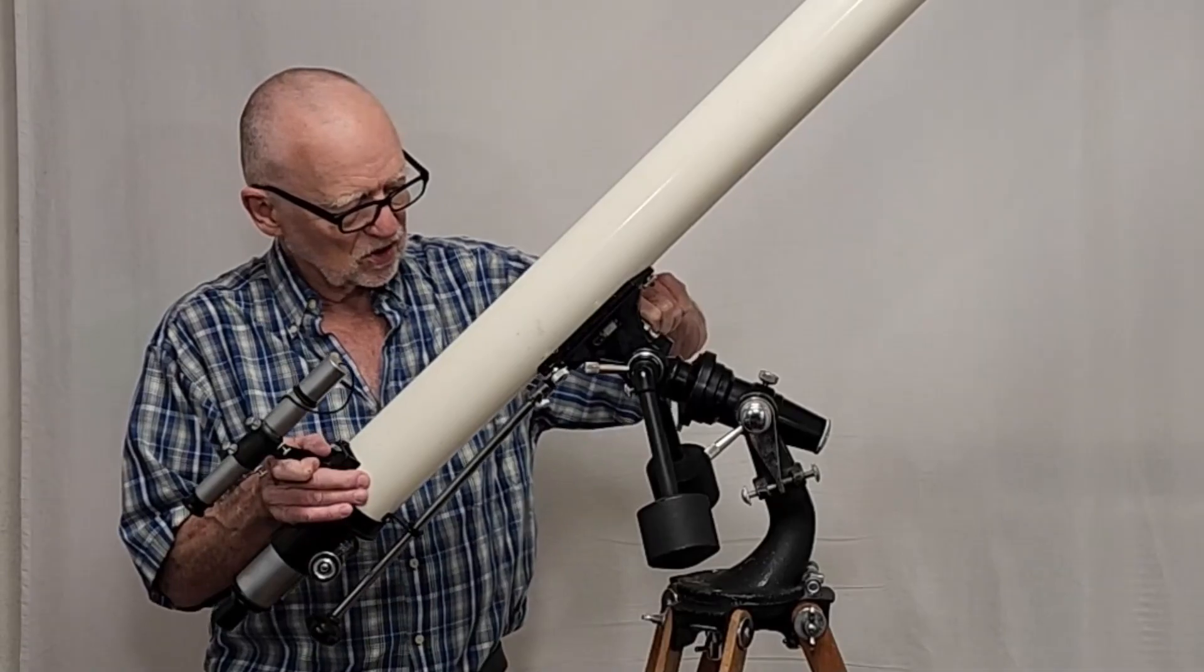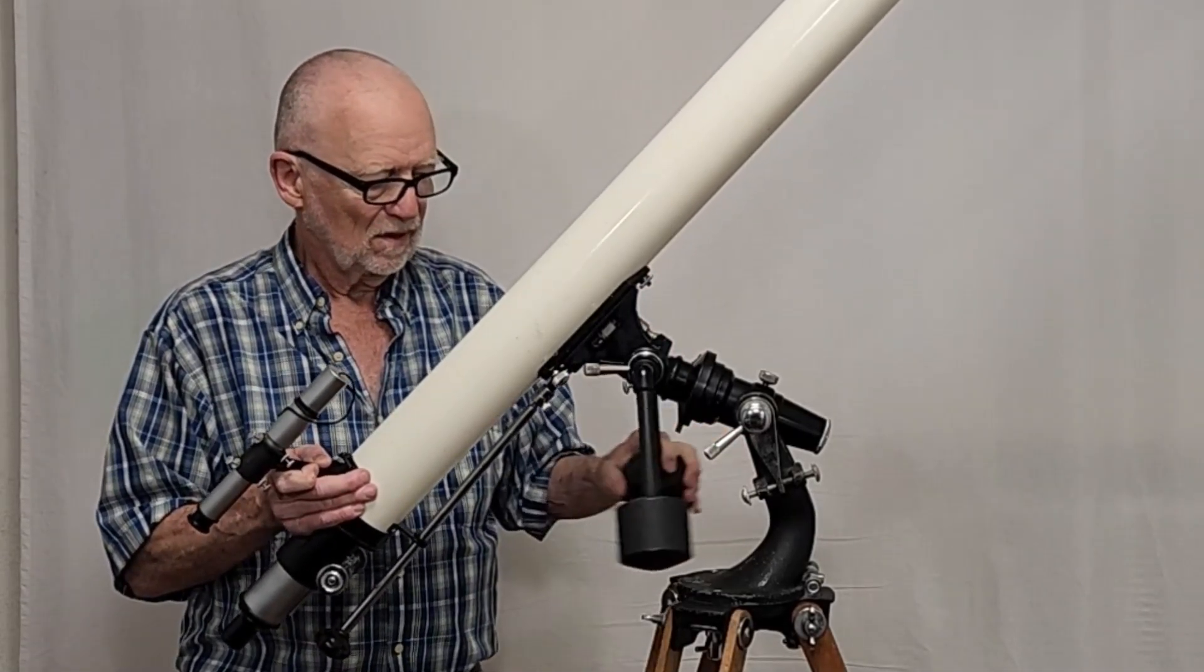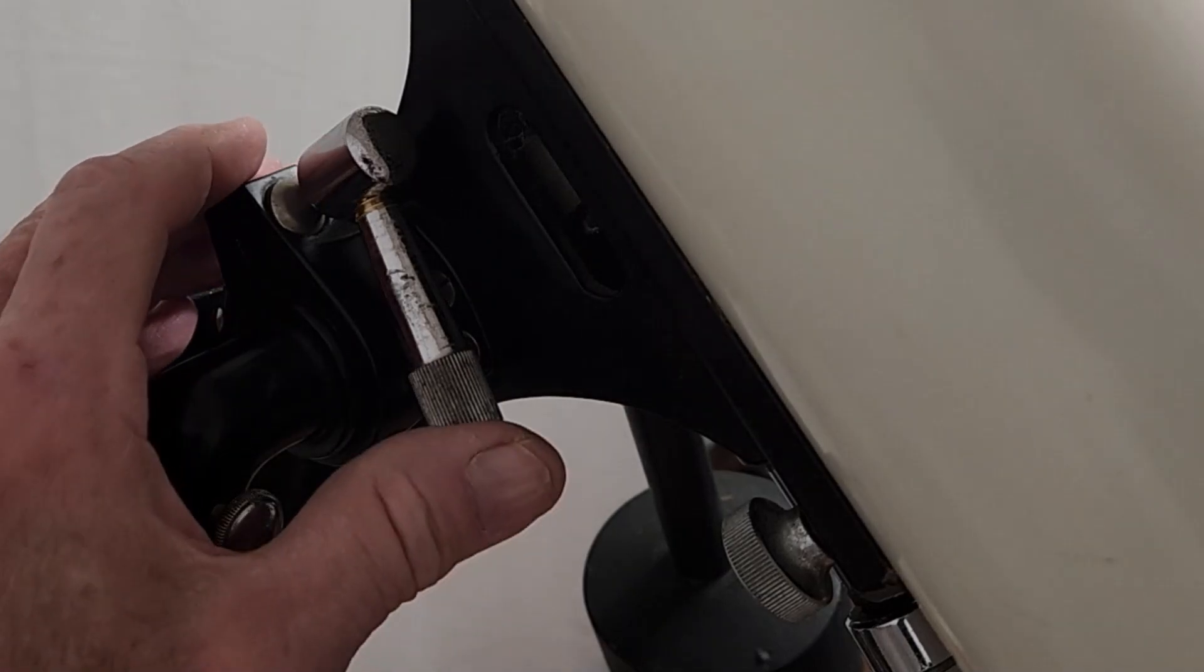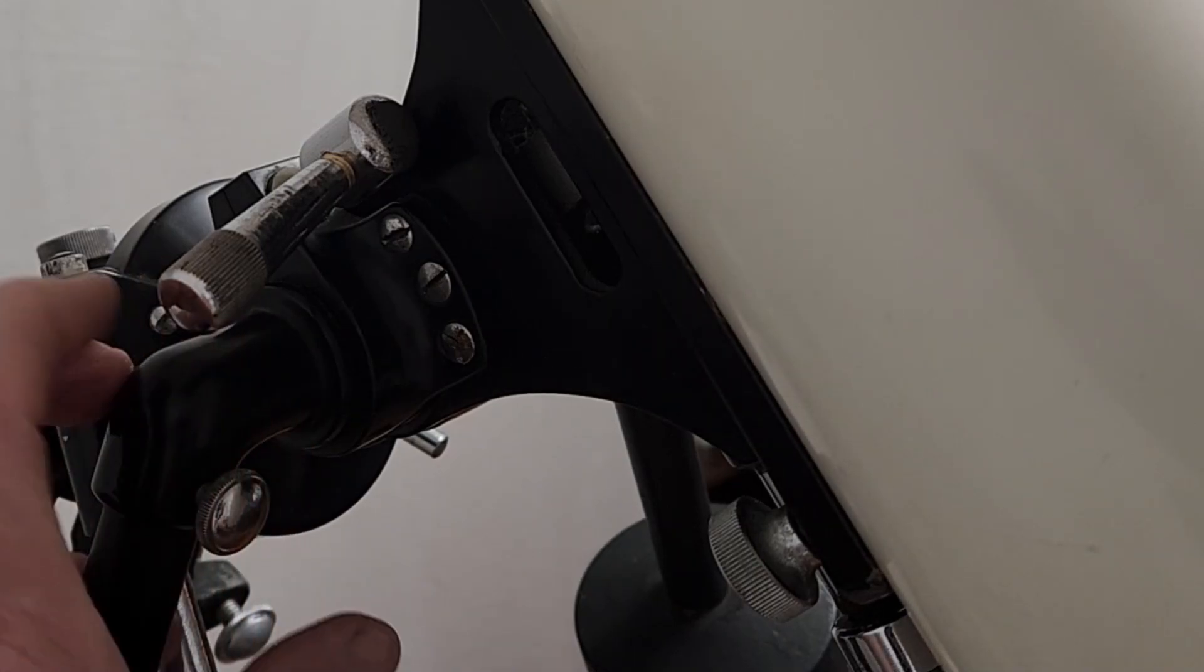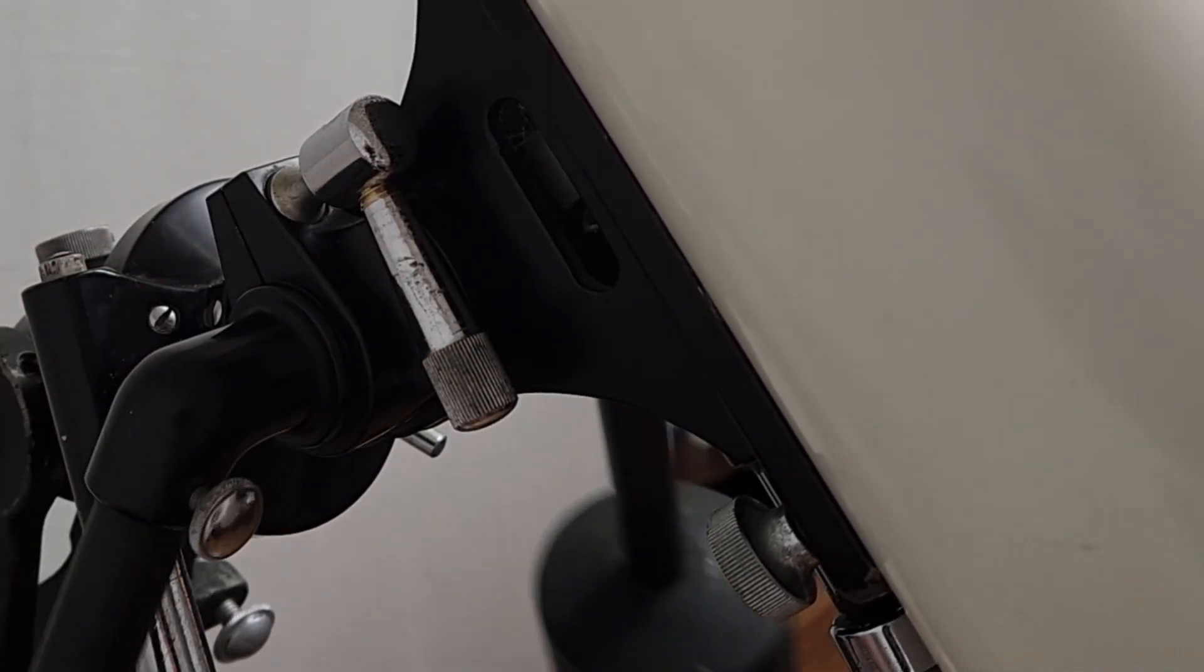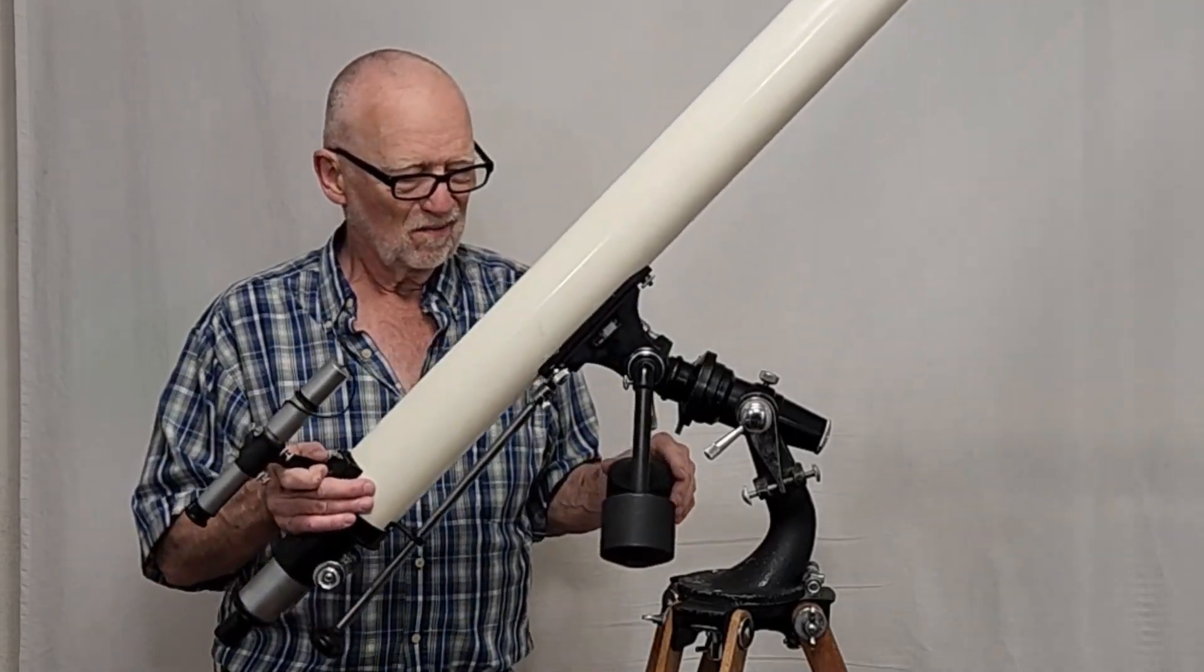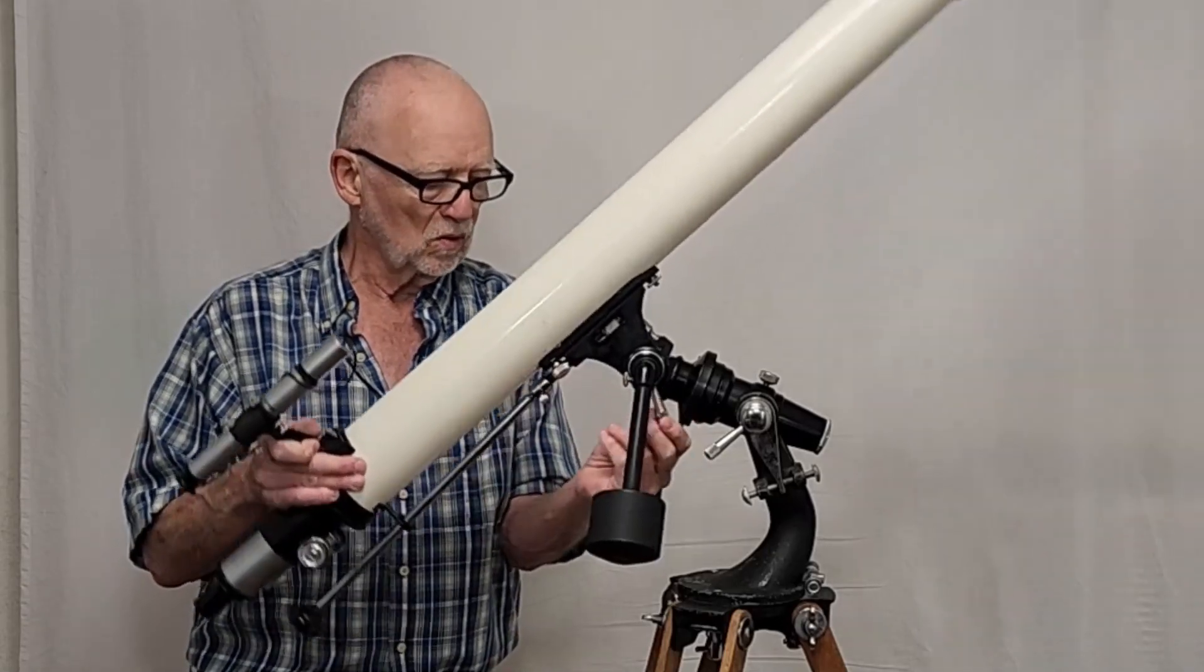Let me show you how to adjust the weights. The weights go like so. There's a lock back here. I'll show you that. This also moves in declination, like so. This is set up in equatorial mode.